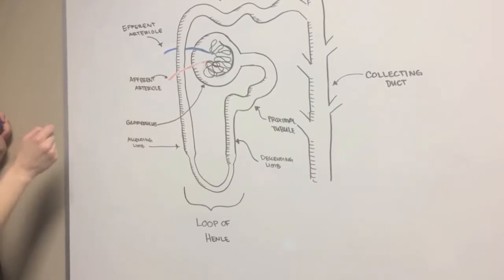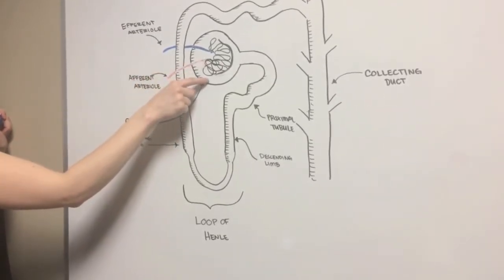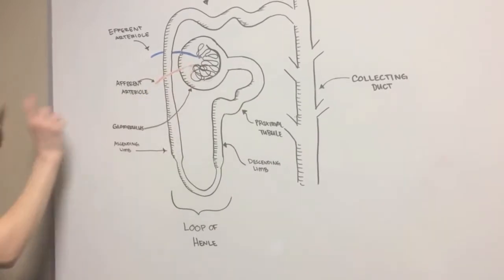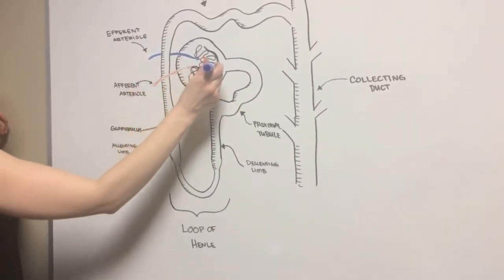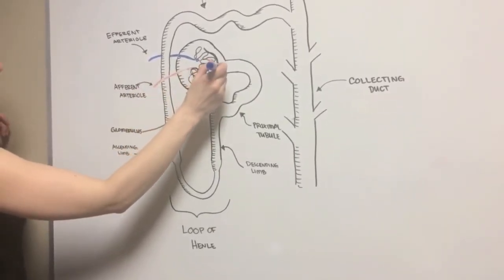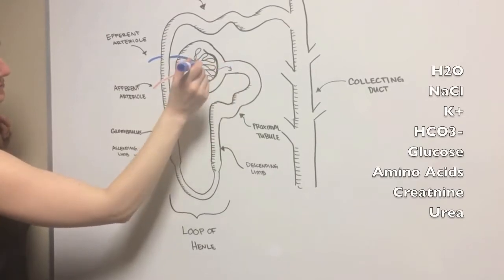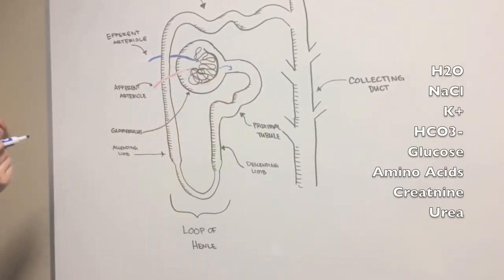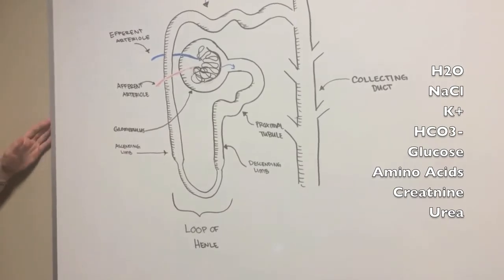The afferent arterioles bring blood to the glomerulus for filtration, and the efferent arterioles take blood away from the glomerulus. When blood enters the glomerulus through the afferent arterioles, it is filtered through the porous capillaries of the glomerulus. This results in filtrate. Filtrate contains water, sodium chloride, potassium, bicarb, glucose amino acids, creatine, and urea.